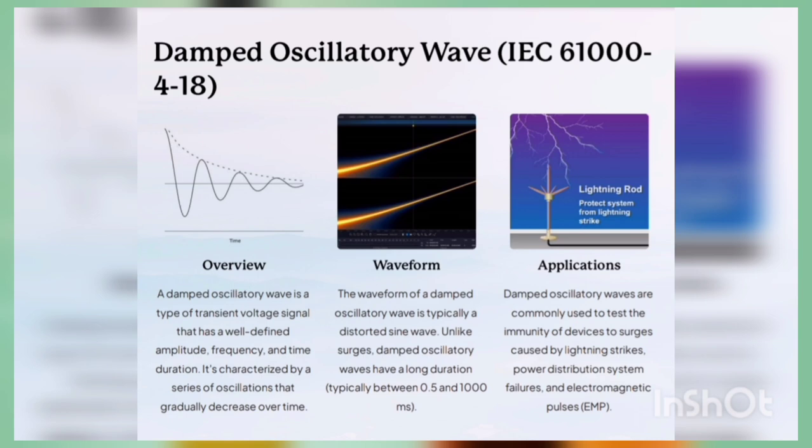The waveform of a damped oscillatory wave is typically a distorted sine wave. Unlike surge, damped oscillatory waves have a long duration, typically between 0.5 to 1000 milliseconds. Damped oscillatory waves are commonly used to test the immunity of devices to surges caused by lightning strikes, power distribution system failures, and electromagnetic pulses (EMP).